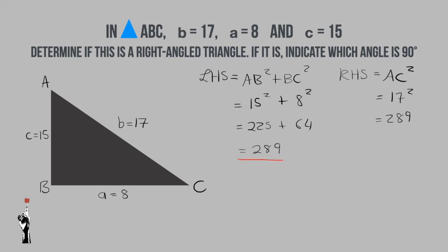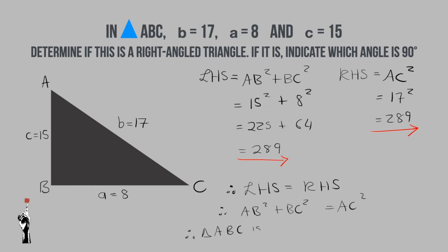It is clear that my left hand side is equal to my right hand side. Therefore, AB squared plus BC squared equals AC squared, and therefore triangle ABC is a right angled triangle. They also ask me to indicate which angle is the 90 degree angle. My 90 degree angle is always opposite my hypotenuse. Since AC is my hypotenuse, the angle on the opposite side is angle B. Therefore, angle B equals 90 degrees.